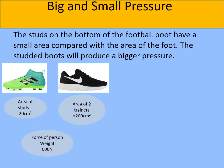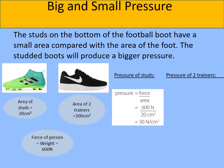The force of the person wearing these pieces of footwear is given as their weight: 600 newtons. Since we have the area and the force, we can use the pressure equation. Pressure equals force divided by area: for the studs, 600 newtons divided by 20 centimetres squared gives a pressure of 30 newtons per centimetre squared. For the trainers: 600 newtons divided by 200 centimetres squared gives a much smaller pressure of 3 newtons per centimetre squared.